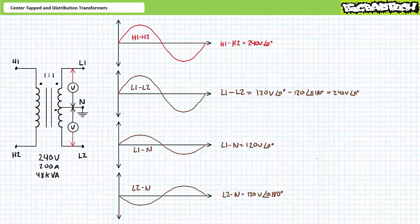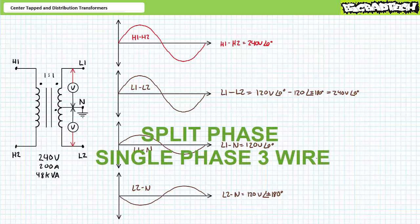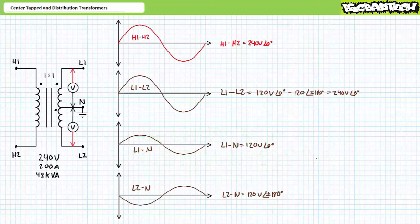L1 to L2 would be 120 at an angle of 0 degrees minus 120 at an angle of 180 degrees, or 240 volts at an angle of 0 degrees. This is what is known as a split phase or single phase three-wire system, where the three wires in question are L1, L2, and neutral. This is a common type of residential power distribution system in the United States.